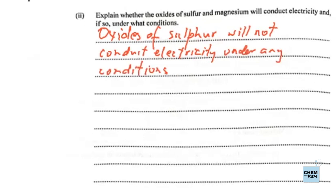The oxides of sulfur will not conduct electricity under any condition. These are covalent compounds — no ions are present, so there is nothing to carry a current if we were to apply a voltage.